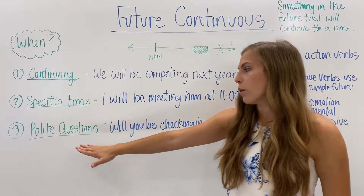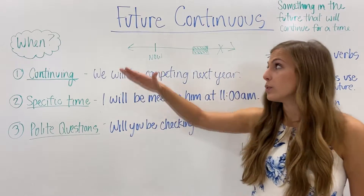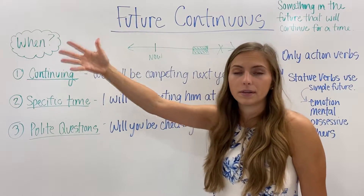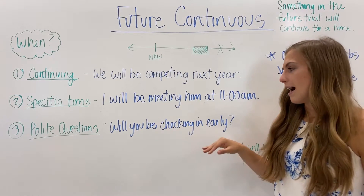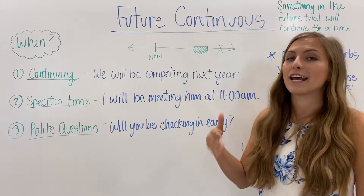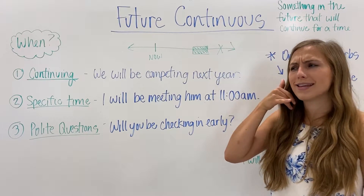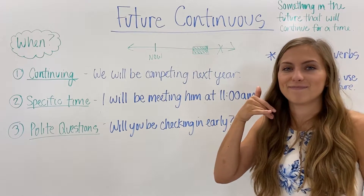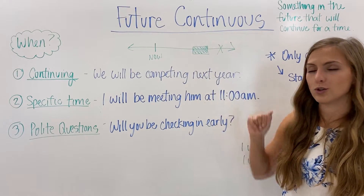Number three: when we ask polite questions. Many times when we ask questions, we can use the future continuous tense when asking about something that will happen in the future. For example, "Will you be checking in early?" Maybe you're going to stay at a hotel and the receptionist will ask, "Will you be checking in early or will you check in on time?" This is an example of a polite question using the future continuous.